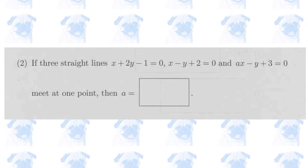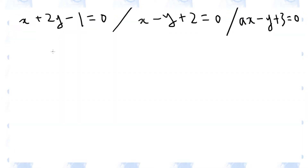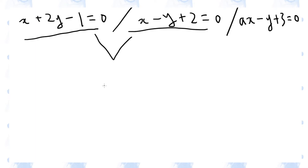Section 1, number 2. In this question, we have three straight lines, and we are told that these three straight lines meet at one and the same point. If three straight lines meet at one point, that means two of the three lines also meet at the same point. So we basically need to find the point of intersection between two of the straight lines, and solve those two equations simultaneously.